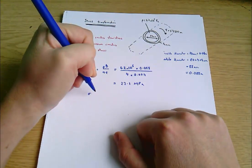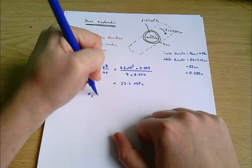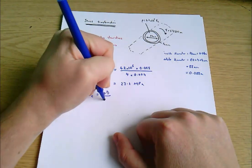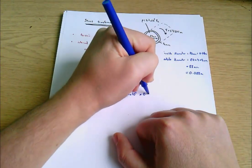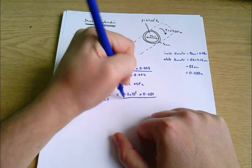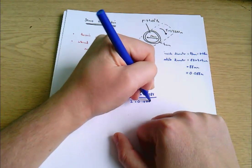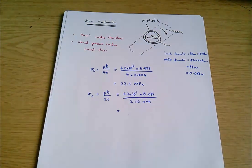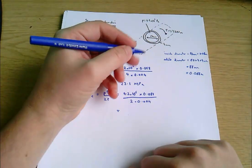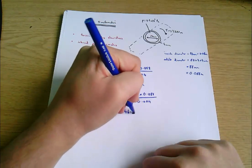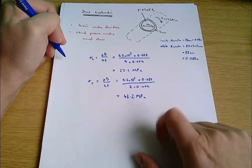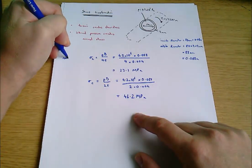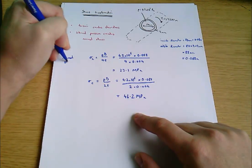Remembering that stresses are measured in megapascals. Now we can go on and do the same thing for the circumferential stress. That's P D over 2T, which equals 4.2 times 10 to the 6 times 0.088, all over 2 times 0.004, and that comes to 46.2 megapascals. So that's all to do with the normal stresses caused by the internal pressure.